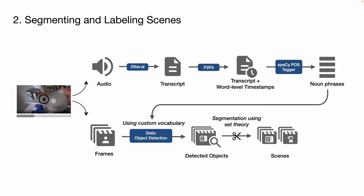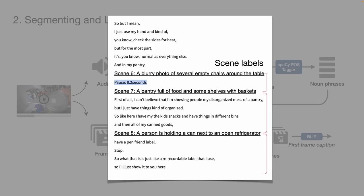We compare the similar objects in the two frames before and two frames after a potential boundary for segmentation. Finally, to create the label of the scene, we use the caption of the first non-blurry frame of each scene using BLIP. As a result, scene labels are added to the audio-visual scripts. Users can navigate between these headings using the H key with the screen reader.